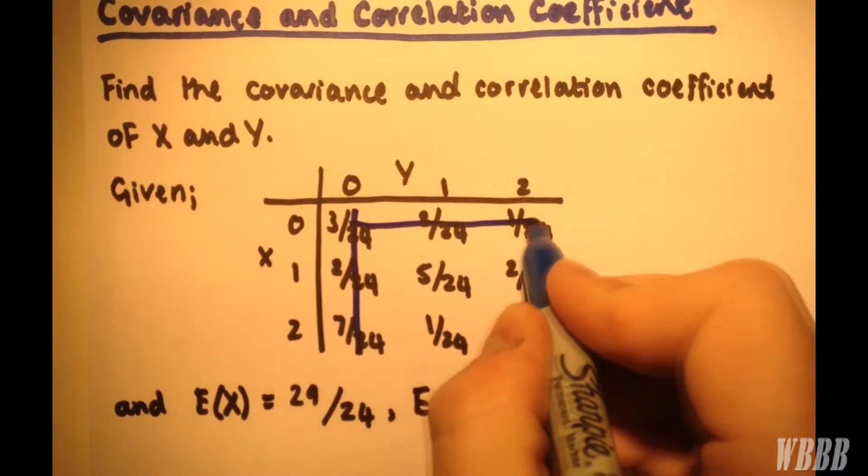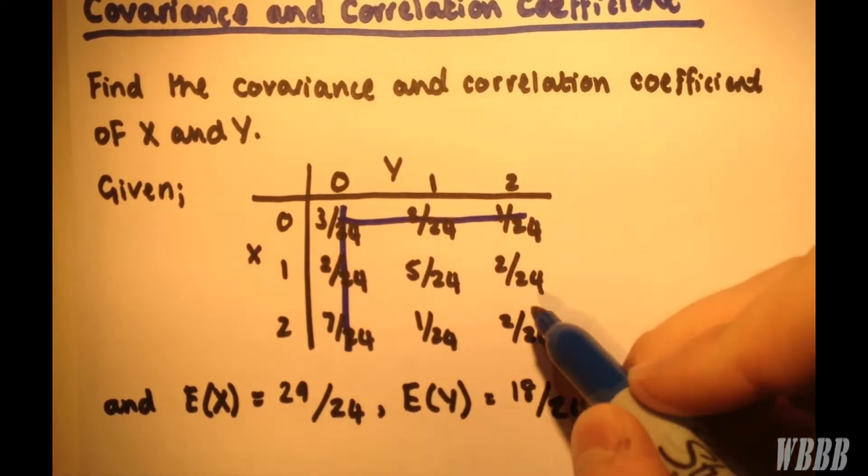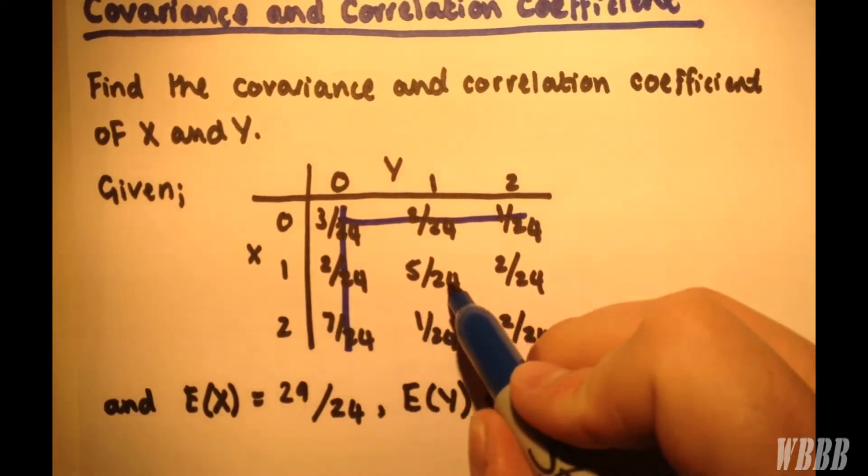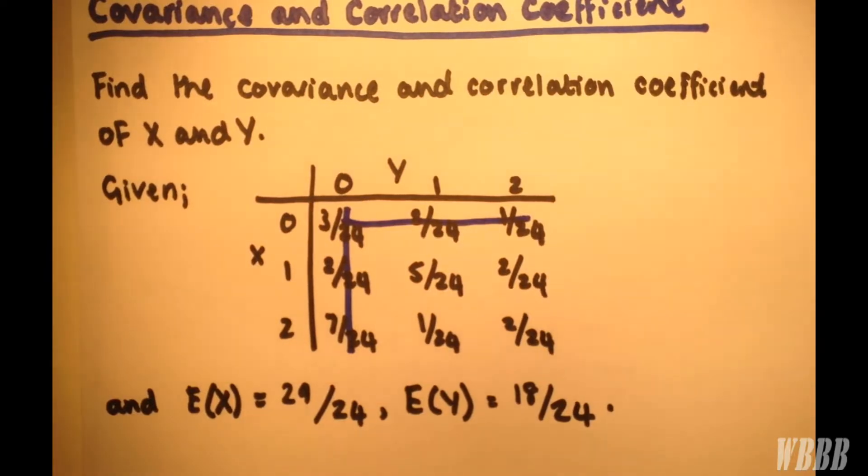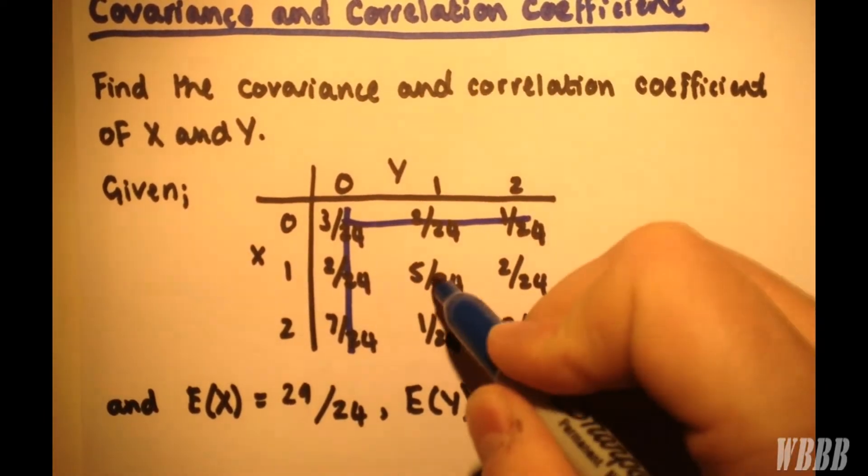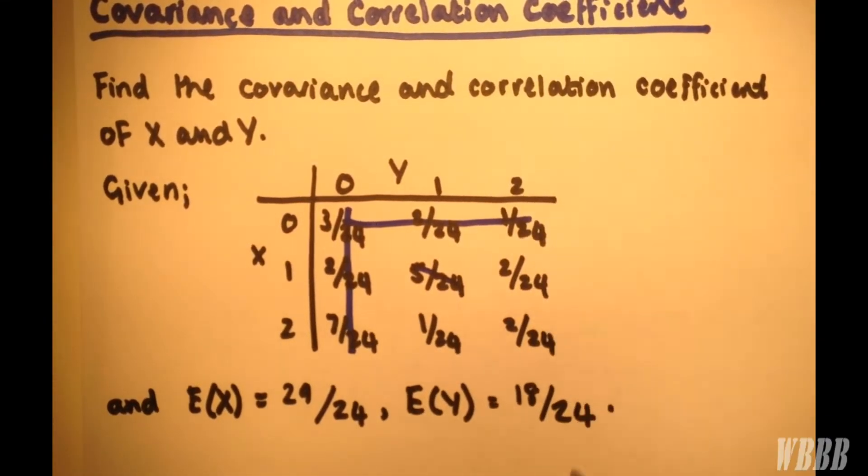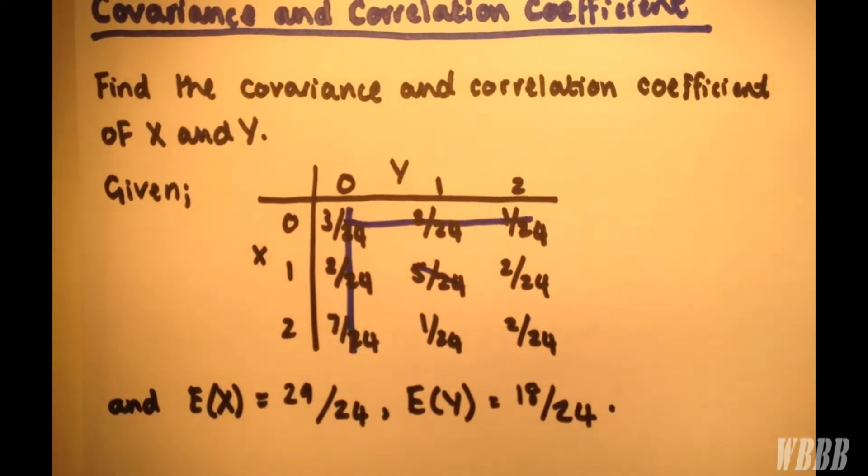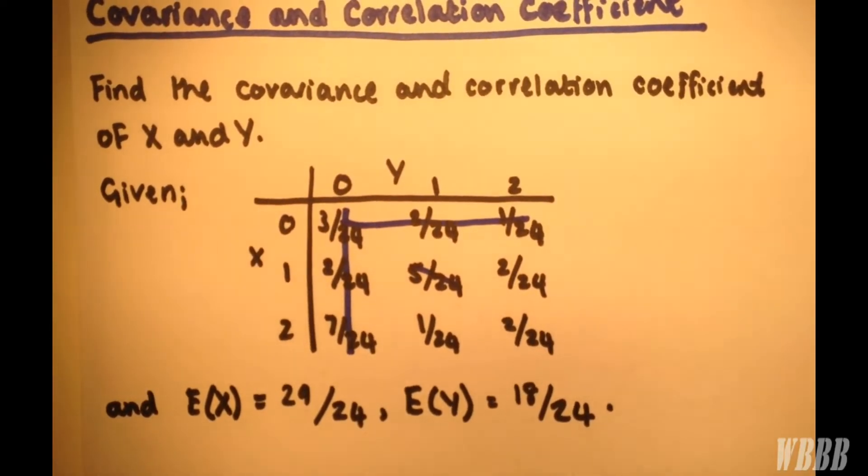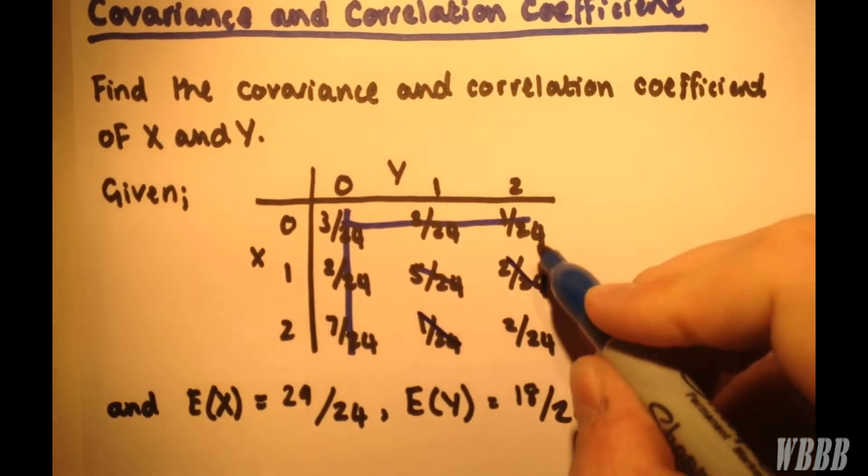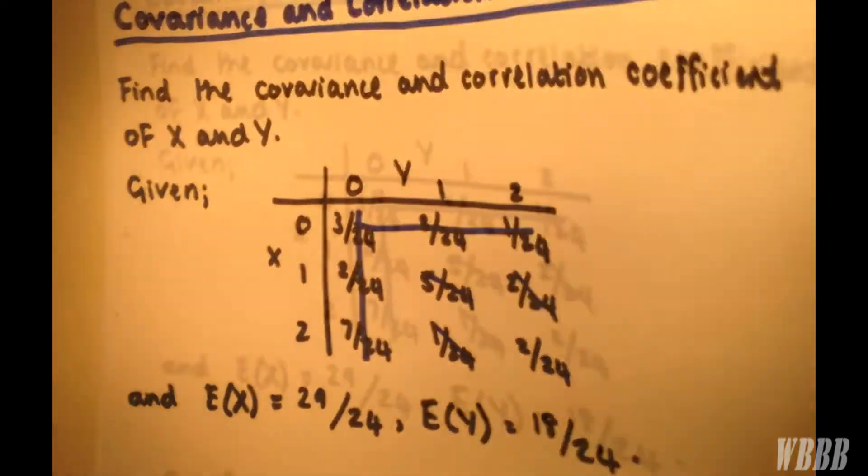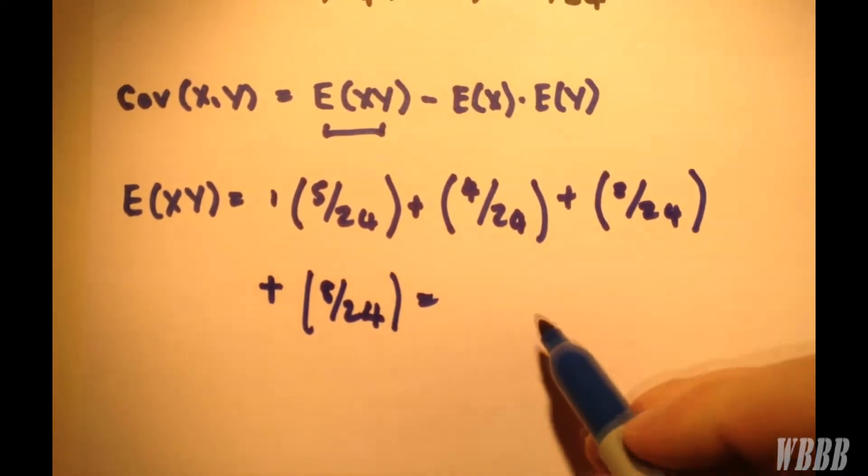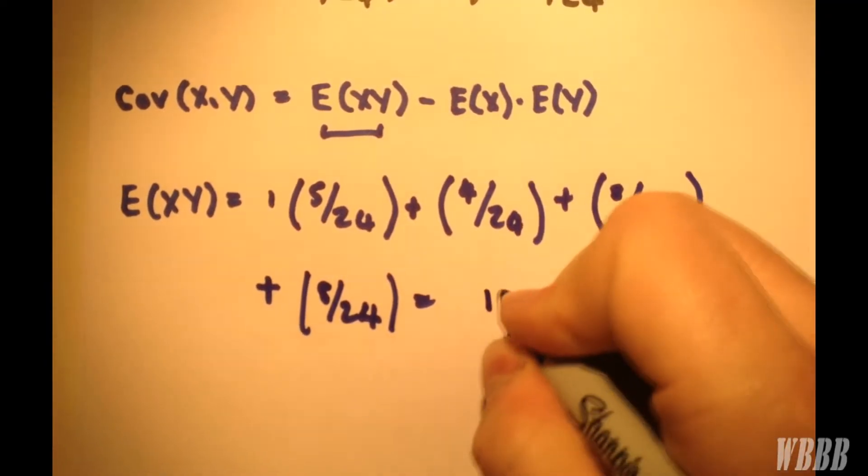So effectively, when we're working an expected value of XY and we have two 0s here, we only have to concern ourselves with these four values here. So we'll have 1 multiplied by 5/24 multiplied by 1, plus 1 times 2 times 2/24. So 2/24. Plus 2 times by 2 times by 2/24. So 8/24. Write them out whichever way you find most comfortable, and we get the value 19/24.